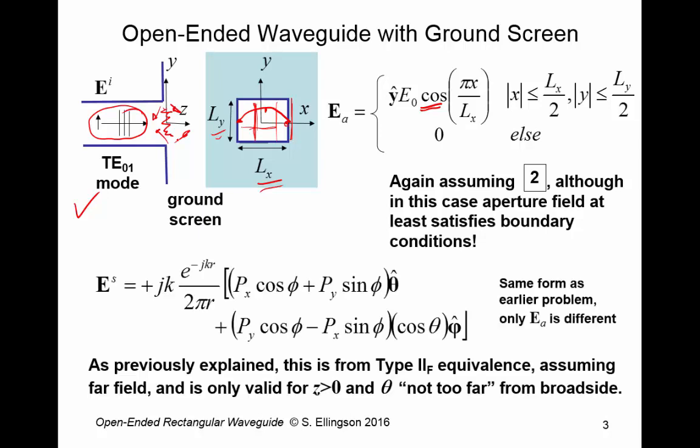Okay, so here's the expression that we can use. We derived this in a previous lecture. This is from what I was calling previously type 2F equivalents, which is the appropriate form to apply when you have an opening in a ground screen.